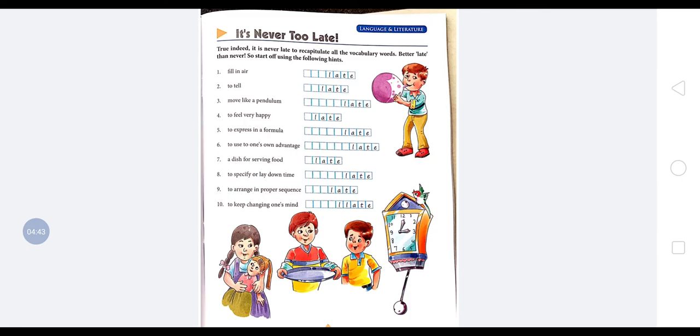Sixth is to use to one's own advantage. Aapne hisaab se, apni advantage ke hisaab se kisi cheez ko use kar lena, aapne baat mein kuch phair badal kar dena - that is known as manipulate. You will be using the letters M-A-N-I, mani, P-U, pu, and then 'late' is already likha hua hai. Manipulate, okay.